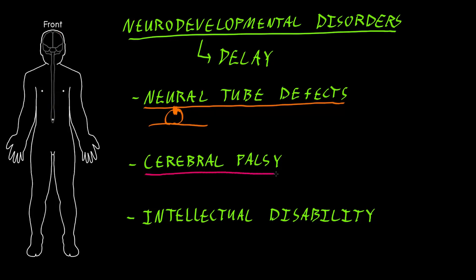Cerebral palsy refers to a number of syndromes that involve abnormal motor functions from brain injury that occurs early during development. There are several different areas in the brain that may be affected to cause the motor abnormalities that result.